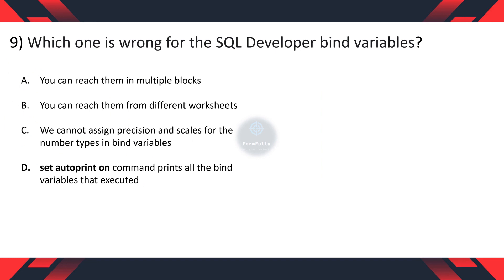Question 9: Which one is wrong for the SQL developer bind variables? A. You can reach them in multiple blocks. B. You can reach them from different worksheets. C. We cannot assign precision and scales for the number type in bind variables. D. Set auto print on command prints all the bind variables that executed.